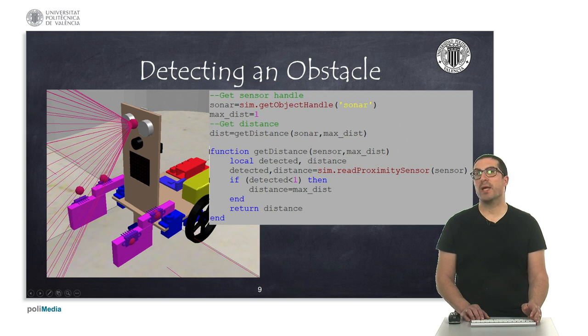As usual, we can get the handle during the initialization of the simulation, and then in the sysCall_sensing function, we can obtain the actual distance value using the read distance function as shown. This is something we already saw in our previous video.